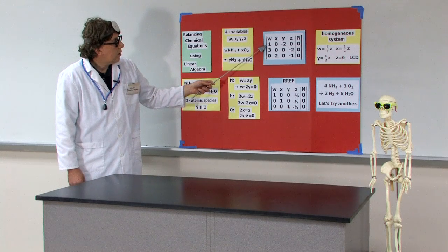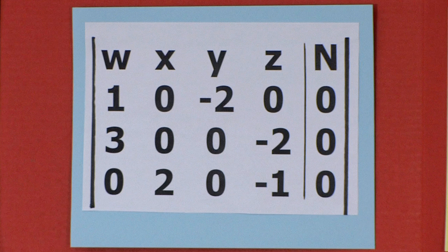So we go across. We've got 1, minus 2, 0, 0. 3, 0, 0, minus 2, 0. And finally, 0, 2, 0, minus 1, 0.